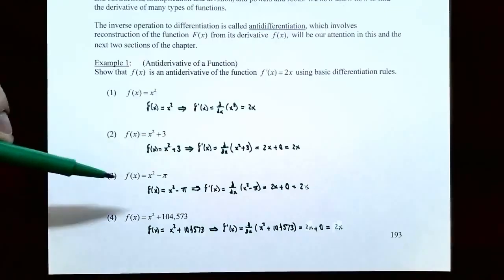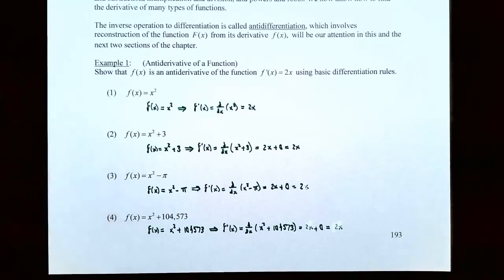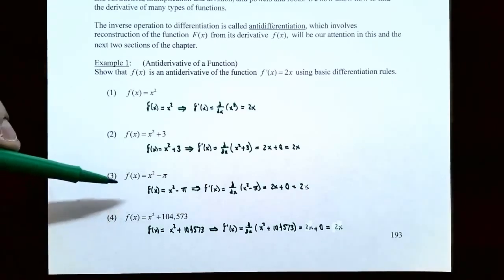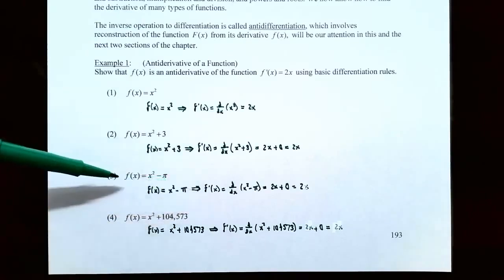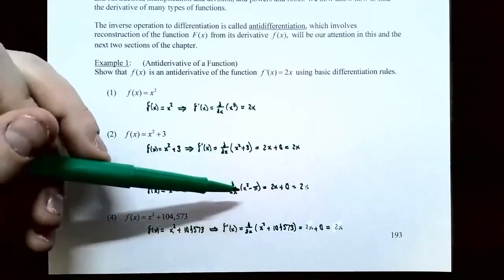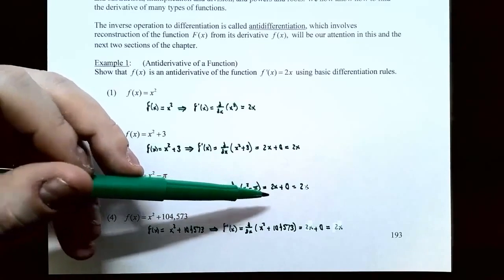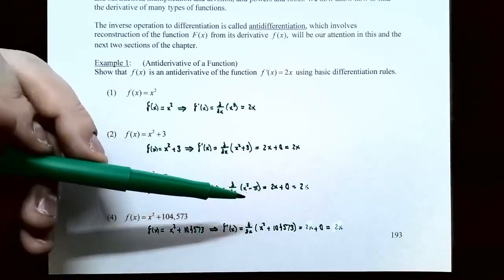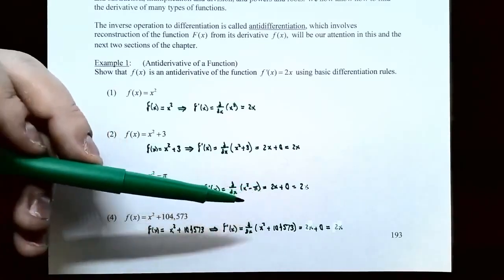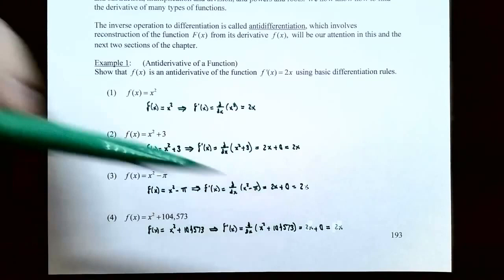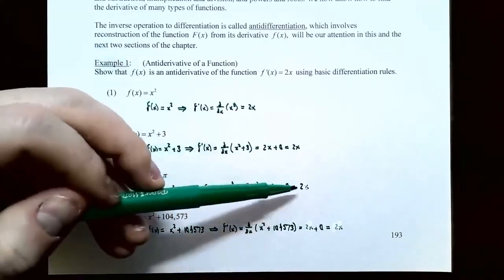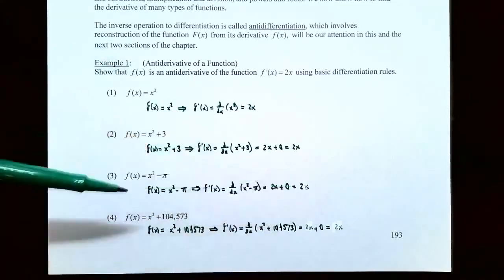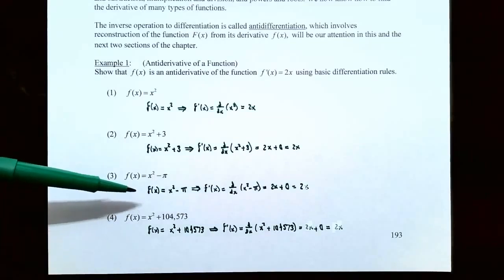Number three, f of x is equal to x squared minus pi. To show that f of x is an antiderivative of f prime of x, take its derivative. The derivative of x squared is 2x using the power rule, and the derivative of pi — well, pi is just a real number, it's a constant — so the derivative is 0. You simplify and get 2x. Since the derivative is 2x, that means f of x is an antiderivative.